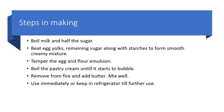While making the pastry cream, the milk is first boiled along with half the sugar. The remaining half of the sugar is beaten with egg yolks along with starches to form a smooth and creamy mixture. This egg and flour emulsion is tempered with the boiled milk solution and later mixed with the milk. The pastry cream is boiled till it starts to bubble. After that, it is removed from fire and butter is added to get extra shine. This cream can be used immediately or kept in the refrigerator for further use.